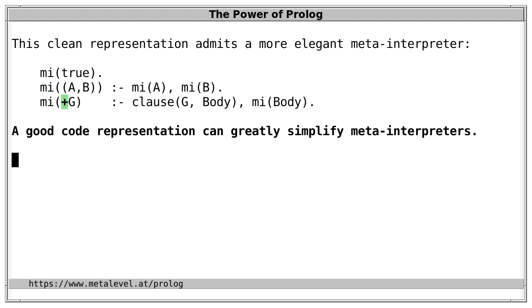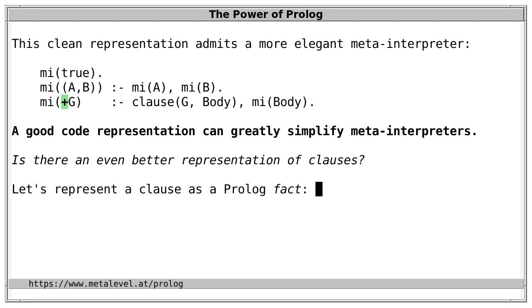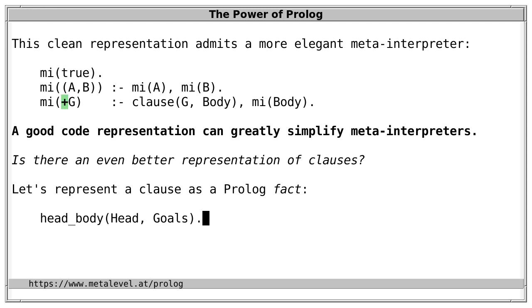This experience raises a question: is there an even better representation of clauses that makes meta-interpretation even easier? Interestingly, we can do that. First, let's represent clauses as Prolog facts, even if they're rules. We use a fact 'head_body(Head, Goals)' where Goals is a list of goals in the body. The list denotes a conjunction of goals: Head is true if each of the goals in the list is true.